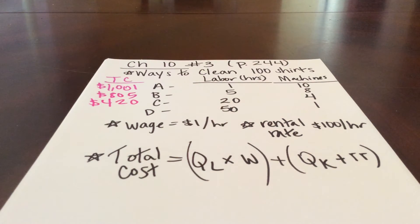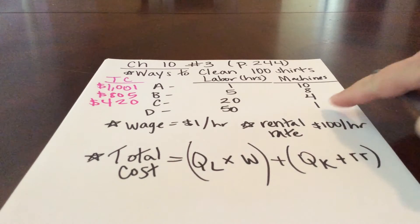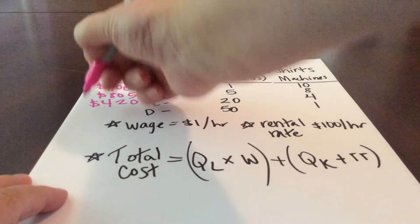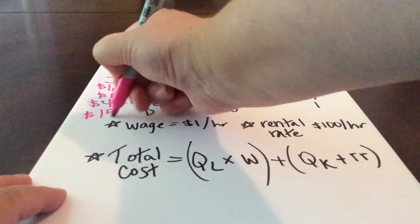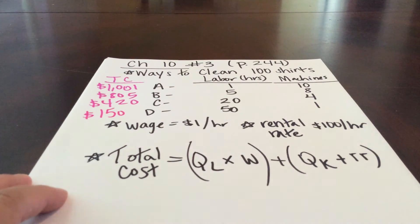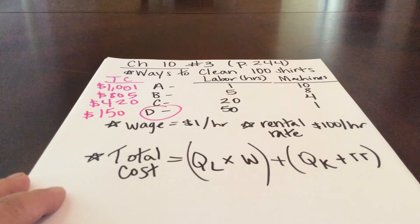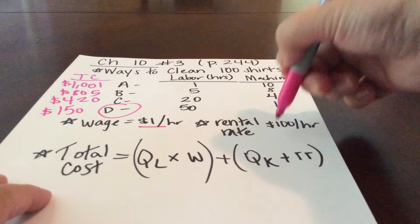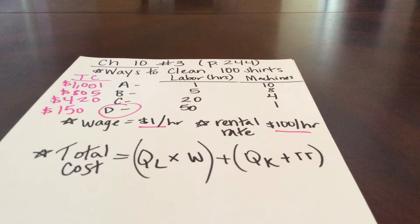We're getting more efficient as we move down. For option D, we have 50 hours of labor times the dollar rate for $50, and then 1 machine times $100 for $100. So 100 plus 50 gives us a total cost of $150. Option D is the most economically efficient if our wage is $1 per hour and the rental rate for capital is $100 per hour.